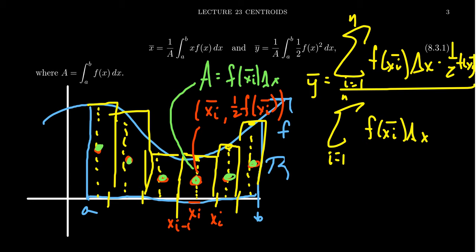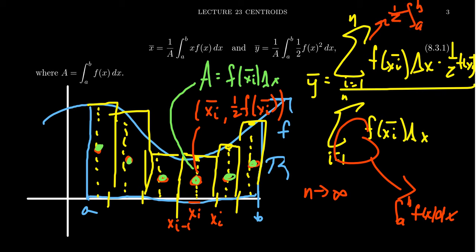And so when you put these things together, as n goes to infinity, the bottom will again converge to the integral from a to b of f of x dx. The top, on the other hand, it'll approach 1 half the integral from a to b of f of x squared dx.